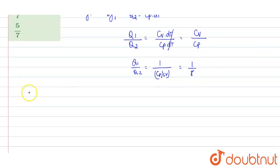For diatomic gas, value of gamma is given by 7 by 5. So here ratio of Q1 and Q2 will be equals to 5 by 7.